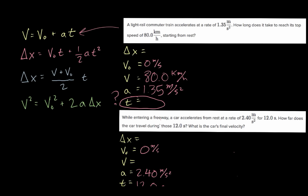So we know three things: initial velocity, acceleration, and time. You'll find that in problems like this, three is the magic number — once you have three of these values, you can find the others using these equations. The first question asks how far the car travels during those 12.0 seconds. 'How far' refers to delta x, the change in position. That's what we're looking for, so let's circle it.